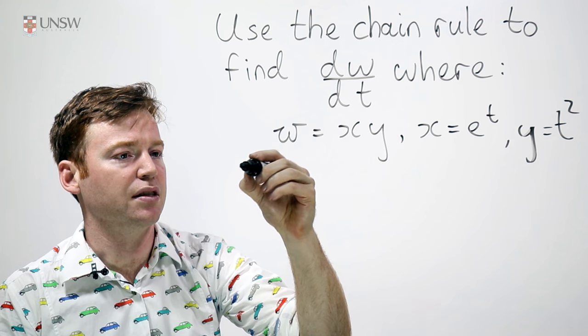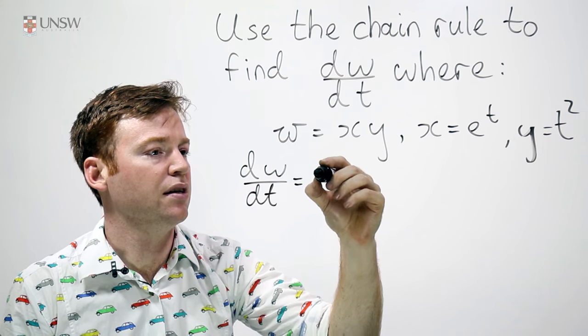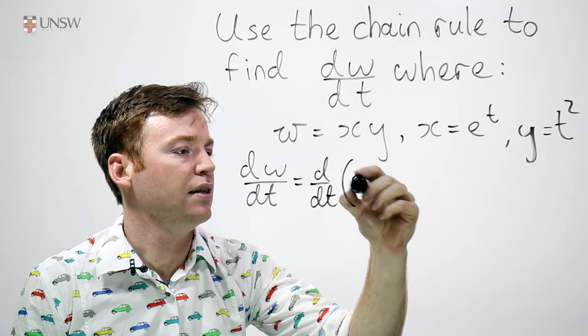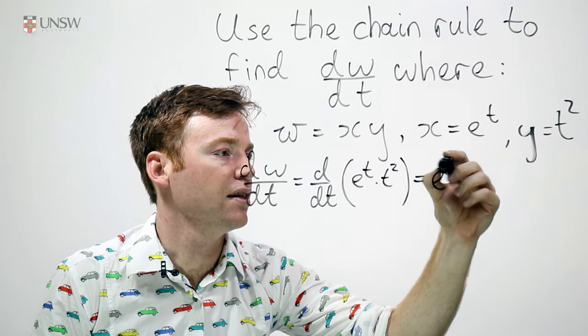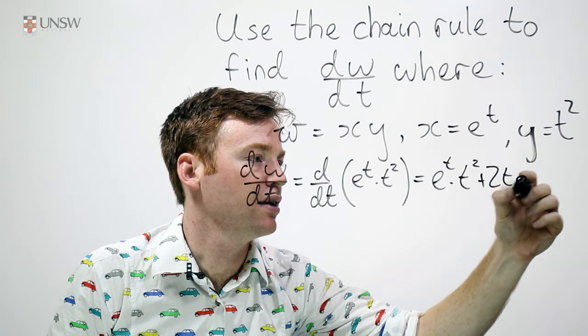In particular, dw/dt is just d/dt of e to the t times t squared, which by the product rule is e to the t times t squared plus 2t e to the t.